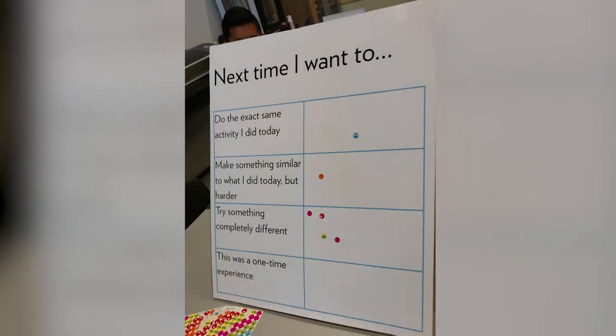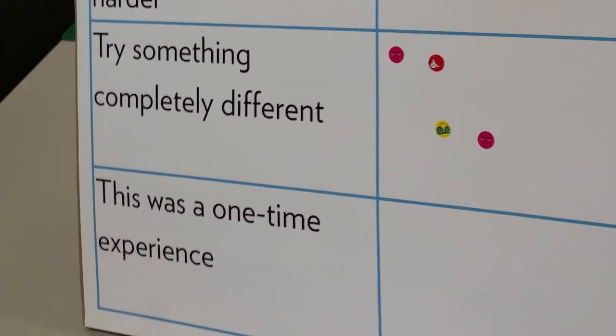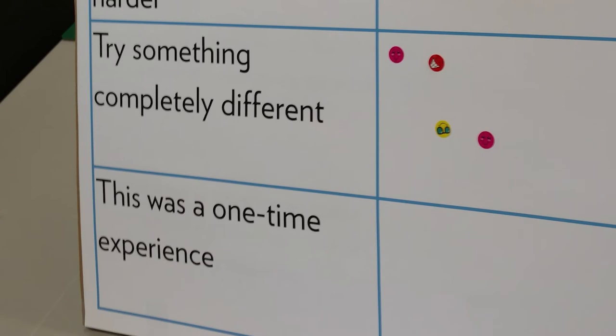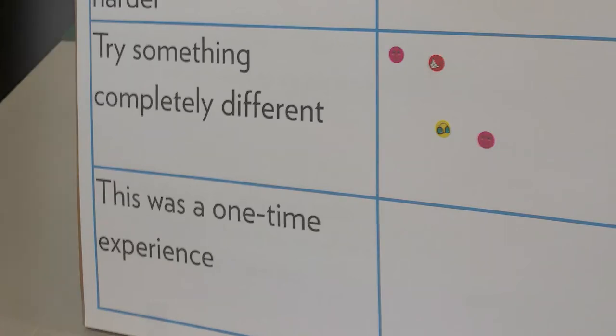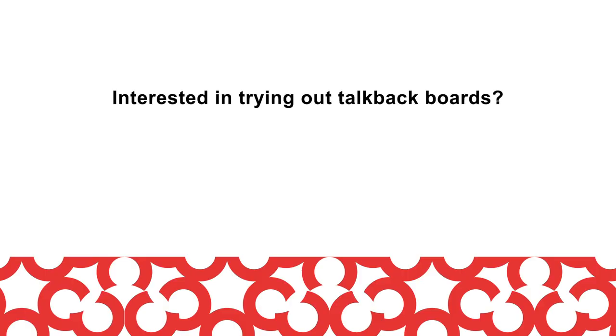One thing we have learned across various instances of talkback boards is that framing is very important. Though it is important to understand what didn't work well, any negative framing can unintentionally leave the patrons feeling like they had a negative experience, even when they did not. Note the last choice for the talkback board in the previous Anythink example: 'This was a one-time experience' — that's a neutral framing for what could otherwise be understood as negative, such as 'I didn't like the program.' One aspect of our work is to develop a database of these talkback prompts — check back for a link, and please share your talkback board ideas there as well.